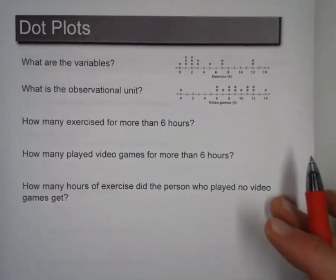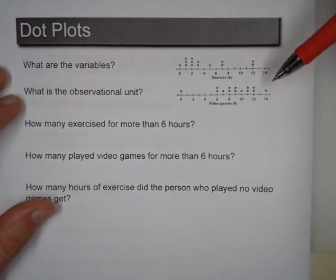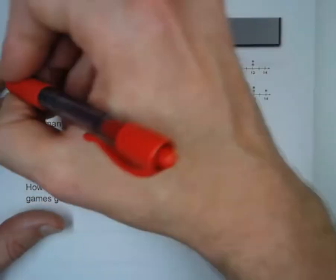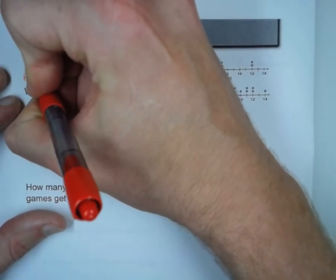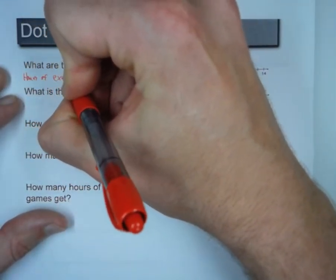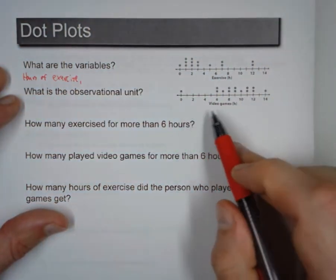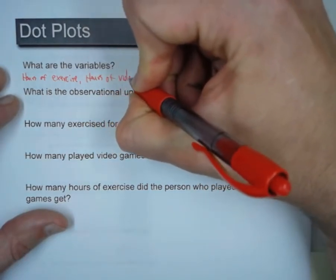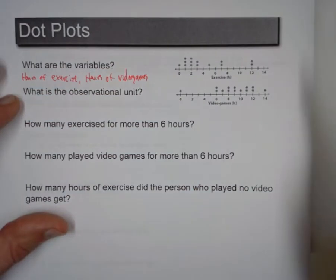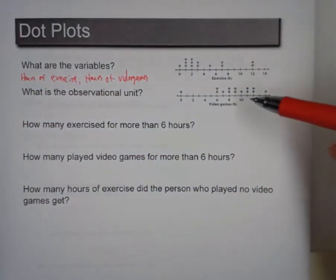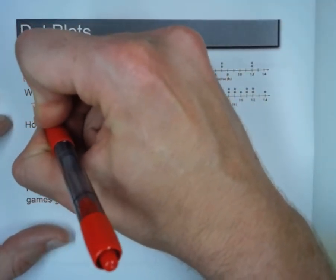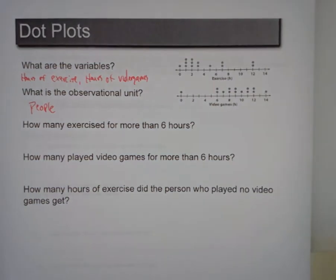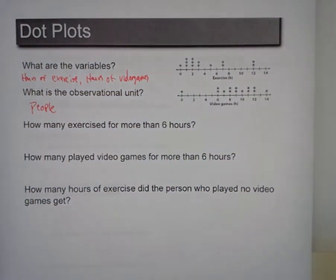So on the next one, here we have two dot plots. This dot plot is measuring hours of exercise, so that's a variable. And the other one is measuring hours of video games. So what is the observational unit? Well, it's going to be people, because only people do exercises and video games. If you want to be specific, you may say that's probably teenagers spending six or more hours on video games, but to be absolutely sure, we'll just say people.